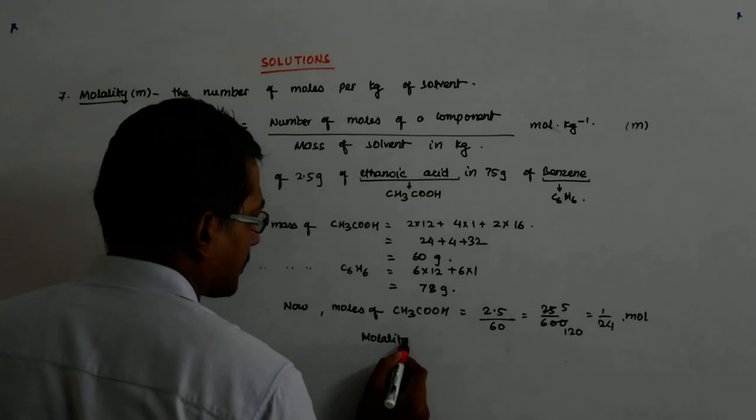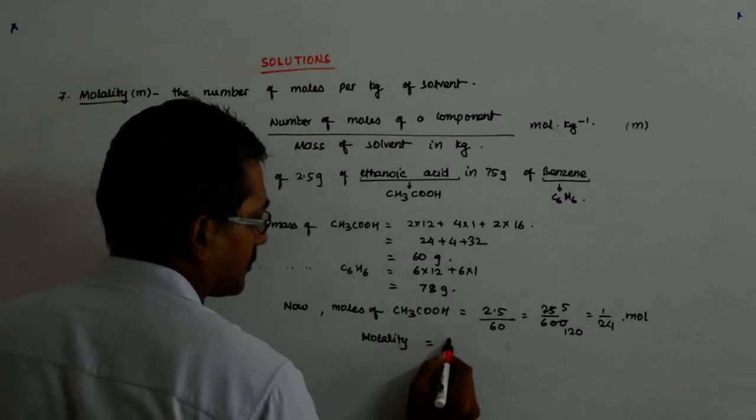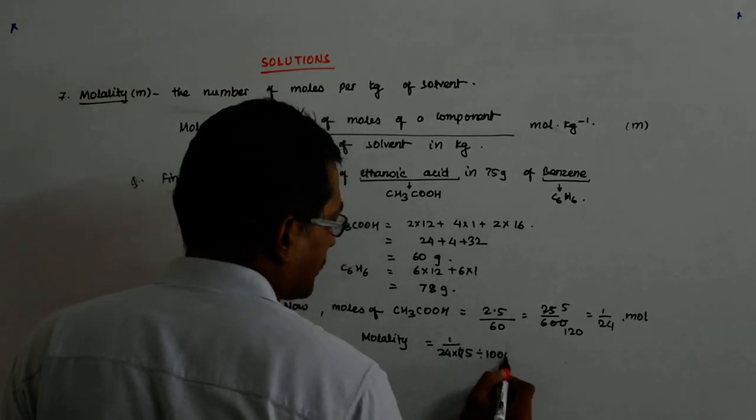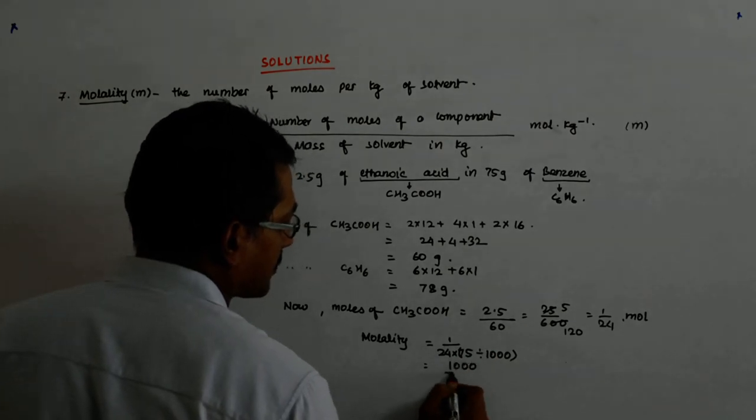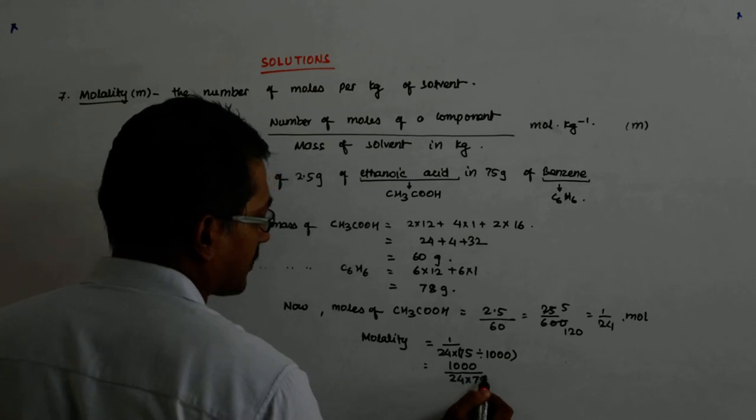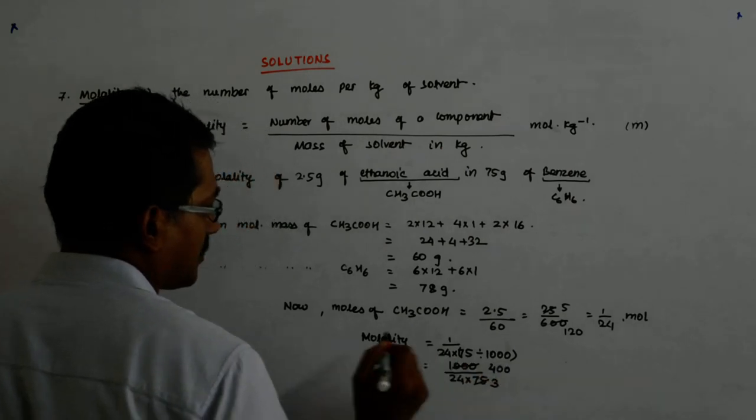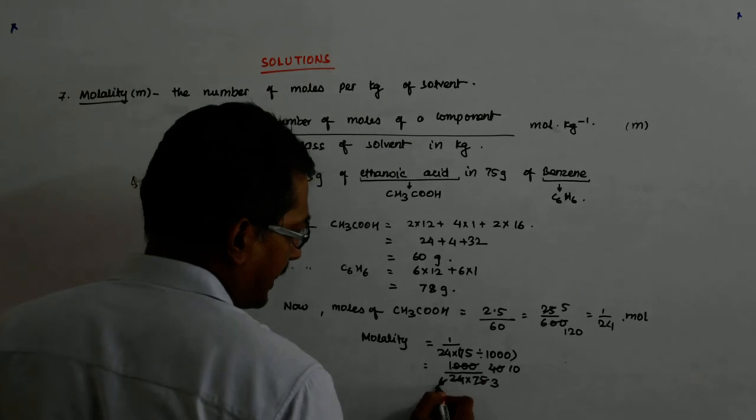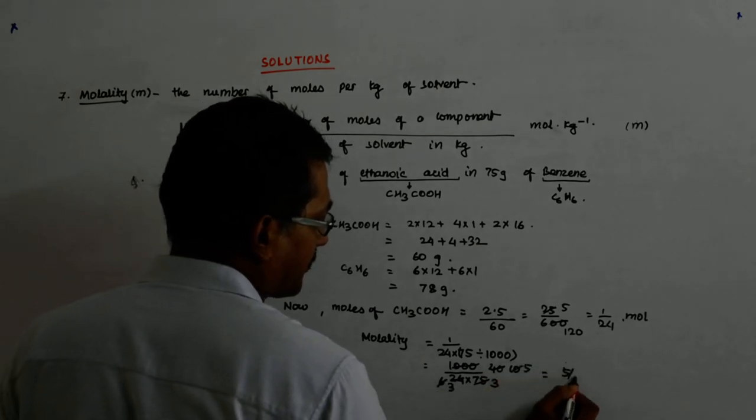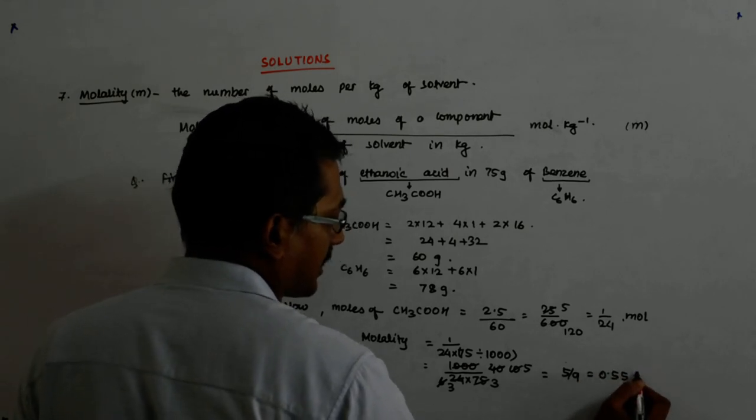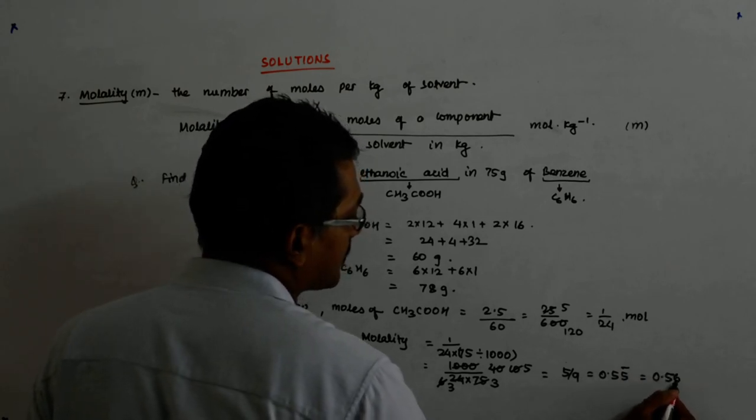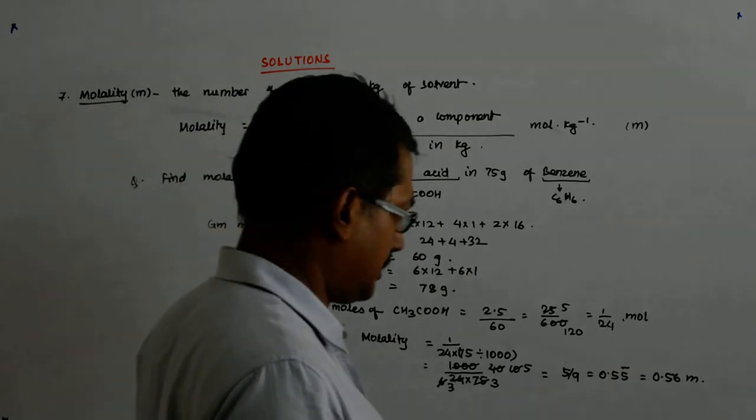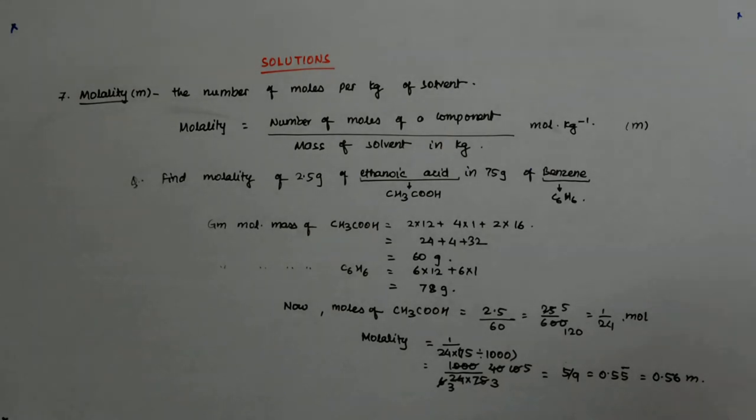So molality is equal to 1 divided by 24 into 75 divided by 1000. This is in kg, mind it. So that 1000 goes up. By 24 into 75, if I cancel it by 25, this becomes 40. And this is 6 and this is 10 and this is 3 and this is 5. So it actually becomes 5 upon 9. So that is 0.555. So that becomes actually 0.56 molal, just mole per kg. Depending on the number of significant digits, you will round it off.